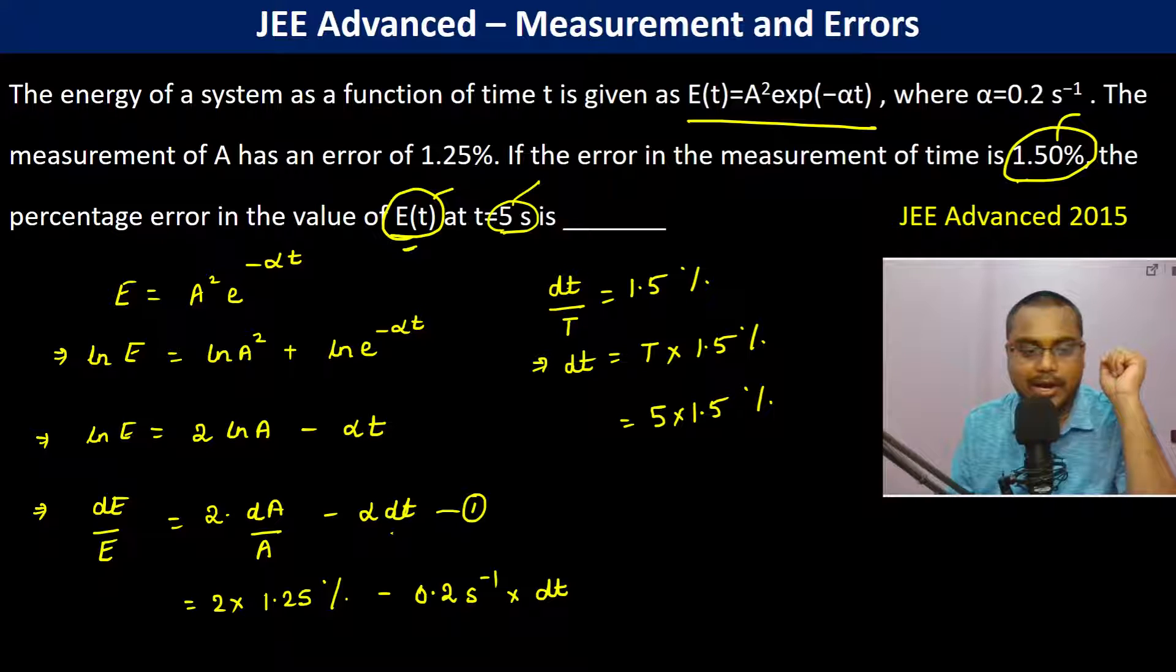So therefore, now since the errors are going to add, so therefore I am going to put a plus sign here. So therefore it becomes 2 into 1.25 is 2.5 percentage plus 0.2 into dt. dt is 5 into 1.5 percentage. So 0.2 into 5 is 1. So therefore 2.5 plus 1.5, this becomes 4 percent.